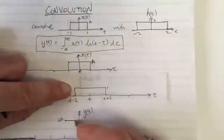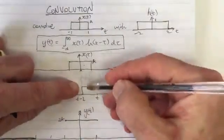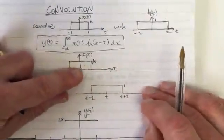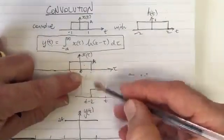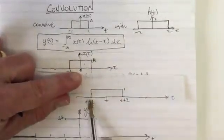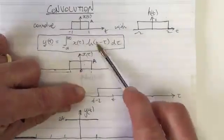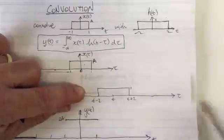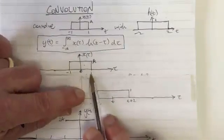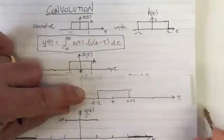Up to t equals 1 the area stays constant at 2a. Then as t increases further, the overlap starts getting less and less because the zero region begins to multiply part of the function, and this continues until t minus 2 equals 1, i.e., t equals 3. For values of t above 3, there is no overlap, so the integral is 0.